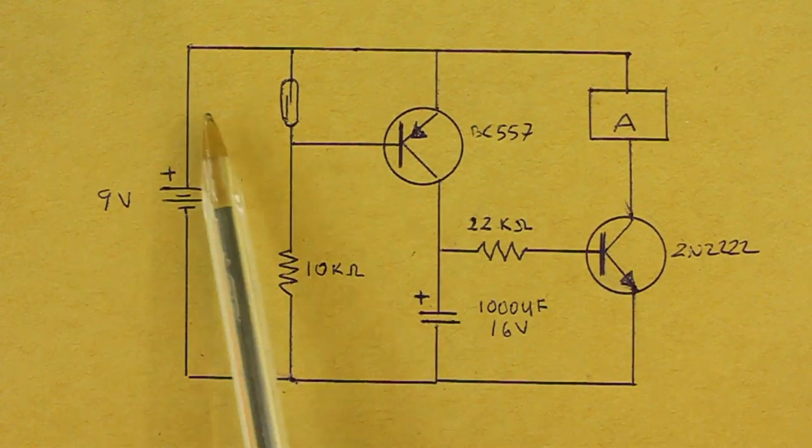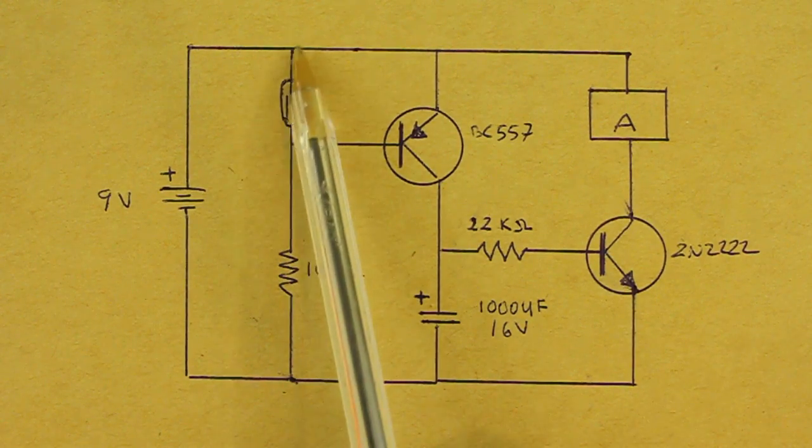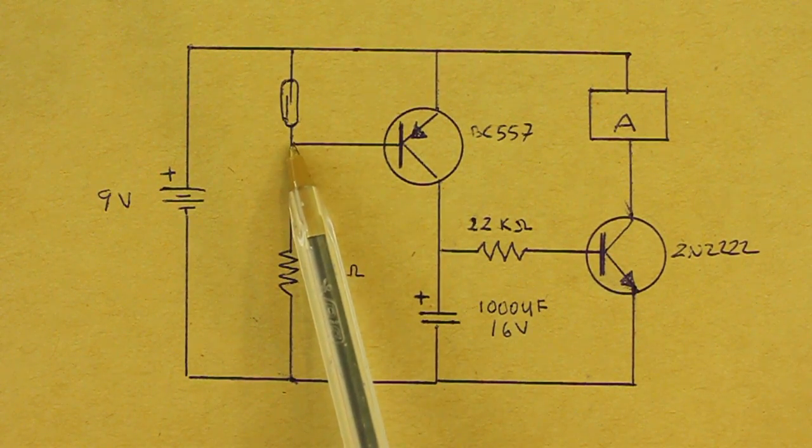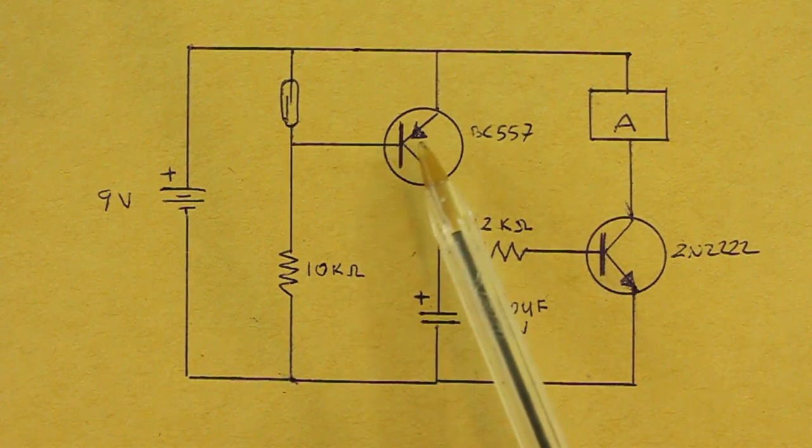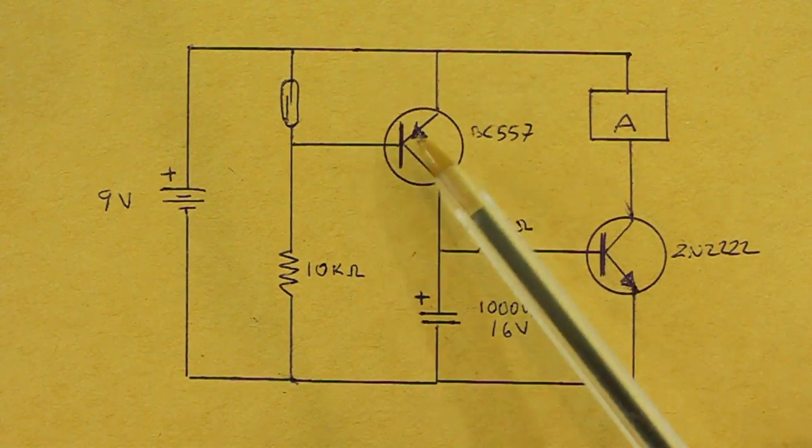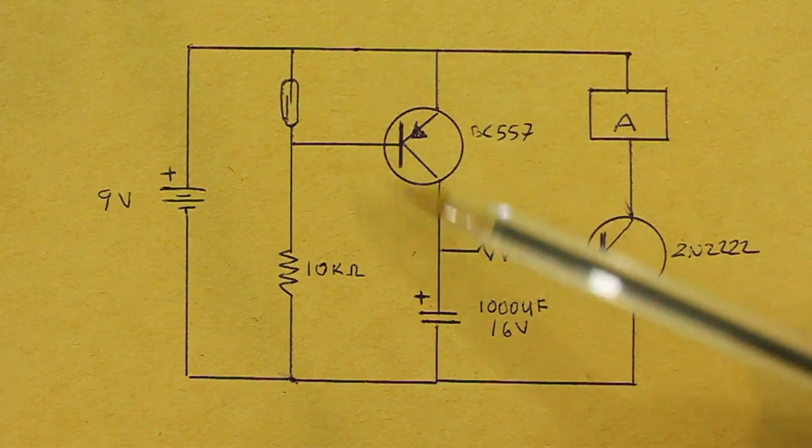So initially we have the magnet close to the switch. Then we have connected the base and the emitter of this PNP transistor so the transistor is not on and the current cannot flow.